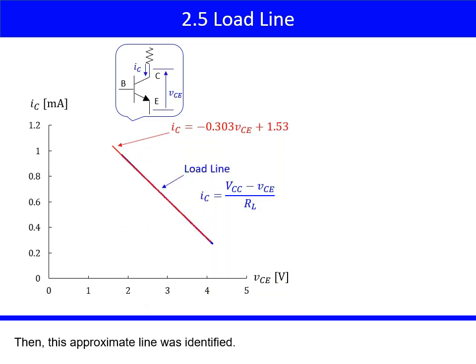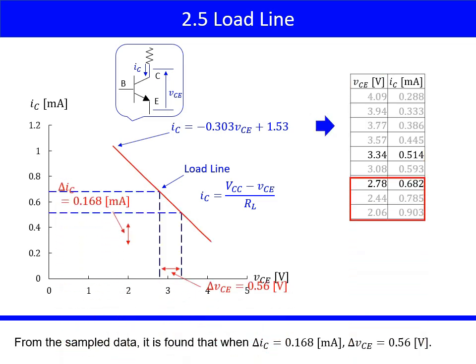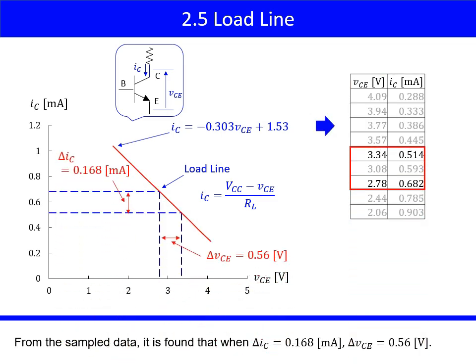Then this approximate line was identified, and these samples were from this equation. From the sampled data, it is found that when delta Ic equals 0.168 milliamps, delta Vce equals 0.56 volts.